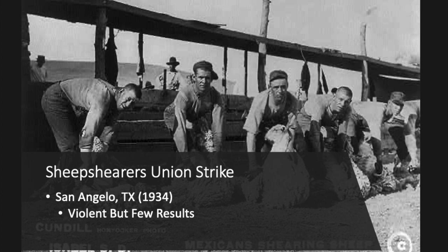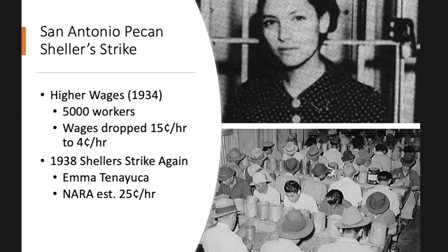In the 1930s, there were other strikes as well during the Depression. One of the most famous was the Sheep Shearers Strike. Mexican Americans in West Texas were predominantly doing the sheep shearing business, traveling from farm to farm and ranch to ranch shearing wool. There was some violence as they struck for better pay, but because competition was so high, they really didn't succeed in their goals.